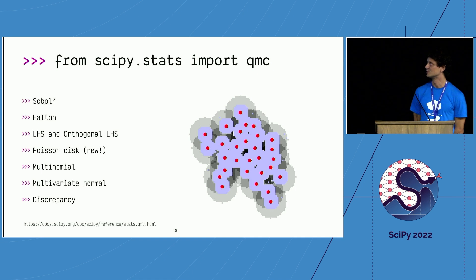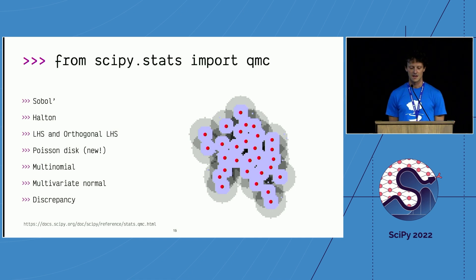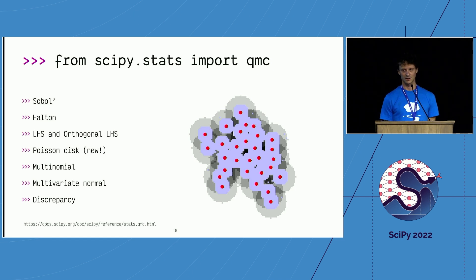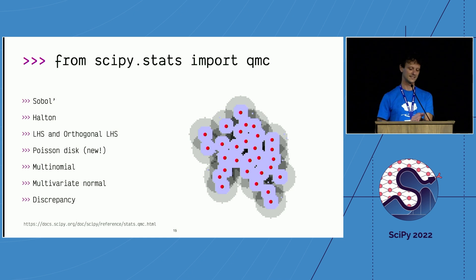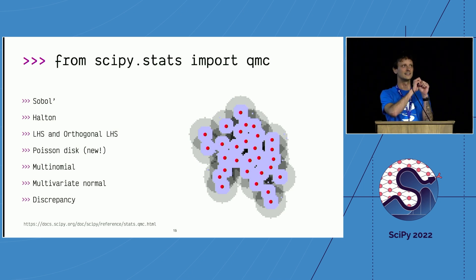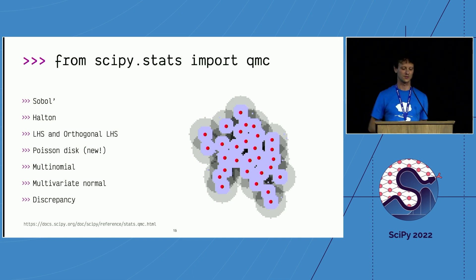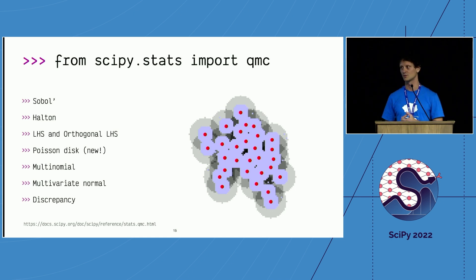What do we have in SciPy? Under stats.qmc, we added a few methods: Sobol, Halton, and Latin Hypercube Sampling. Latin Hypercube is like a Sudoku method — on every column and line you have just one point if you split the parameter space. We are adding something new in the next release with Poisson disc sampling, which is very used in the imagery context — you have a point and the next point is located at least at this radius distance from the previous point, building your sample like that. We also have multinomial and multivariate normal distributions via QMC methods.